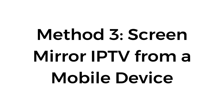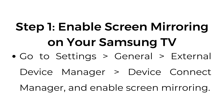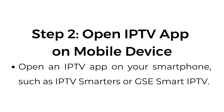If your Samsung TV doesn't support the IPTV app directly, you can use screen mirroring to cast from an IPTV app on your phone. Step number one, enable screen mirroring on your Samsung TV. Go to Settings, then General, then External Device Manager, then Device Connect Manager, and enable screen mirroring.